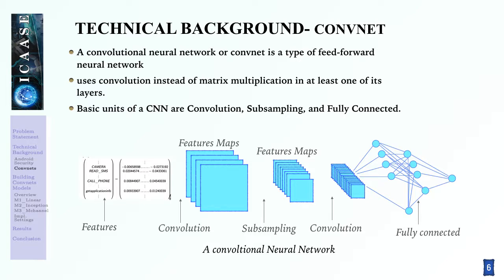Now we introduce some terminology behind convolutional neural networks. A convolutional neural network, or CNN for short, is a type of feed-forward neural network. It is inspired by the organization of the animal visual cortex and uses convolution instead of matrix multiplication in at least one of its layers. The basic units of CNN are convolution, subsampling to reduce the computational load and memory usage, and fully connected layers for the classification task.